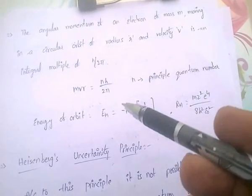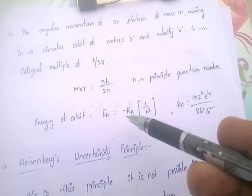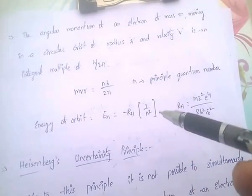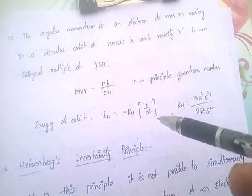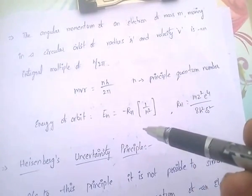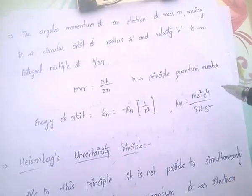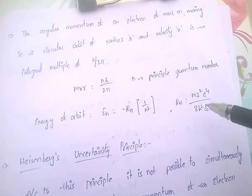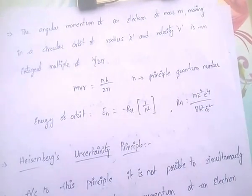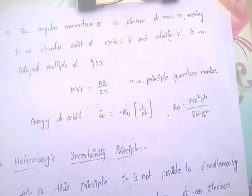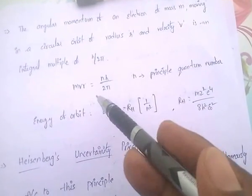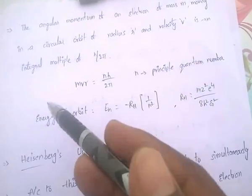And the energy of the orbit is given by E_n = −R_H × (1/n²), where R_H is nothing but mz²e⁴ / (8h²ε₀²). So mvr = nh/2π.